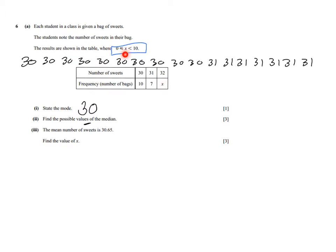Let's imagine x is 0 — x is greater than or equal to 0 and less than 10, so x equals 0 is valid. I eliminate values from each end, moving inwards, and we can see that one possible value for the median is 30. So when x is 0, the median is 30, same as the mode.